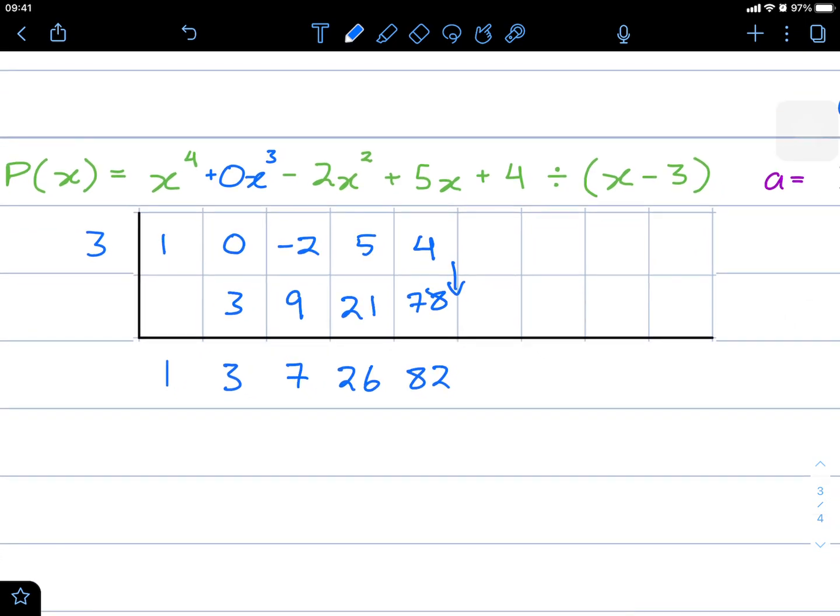And since our power started on 4, this now will begin on 3. Let's make some space. Going to be x cubed plus 3x squared plus 7x plus 26 plus 82 over x minus 3. And that there is synthetic long division.